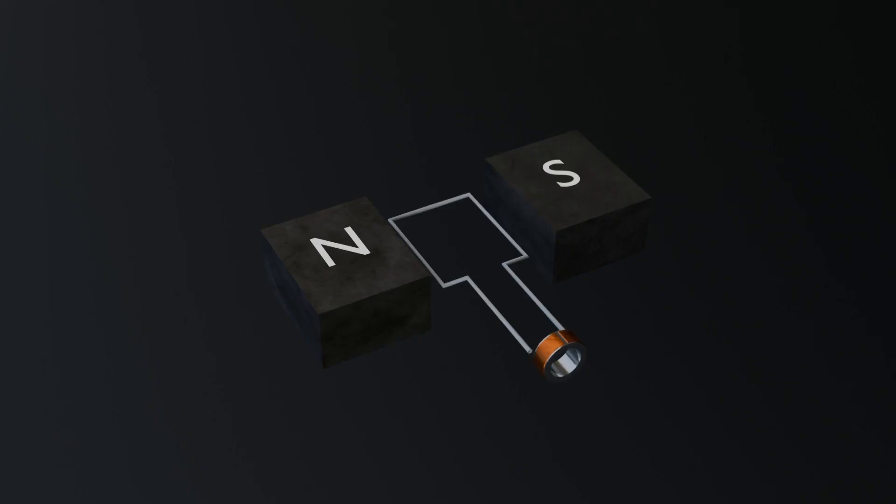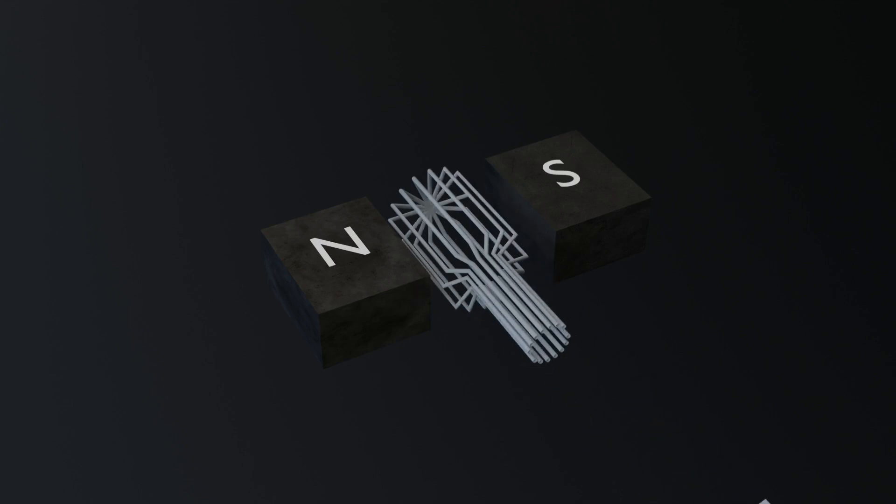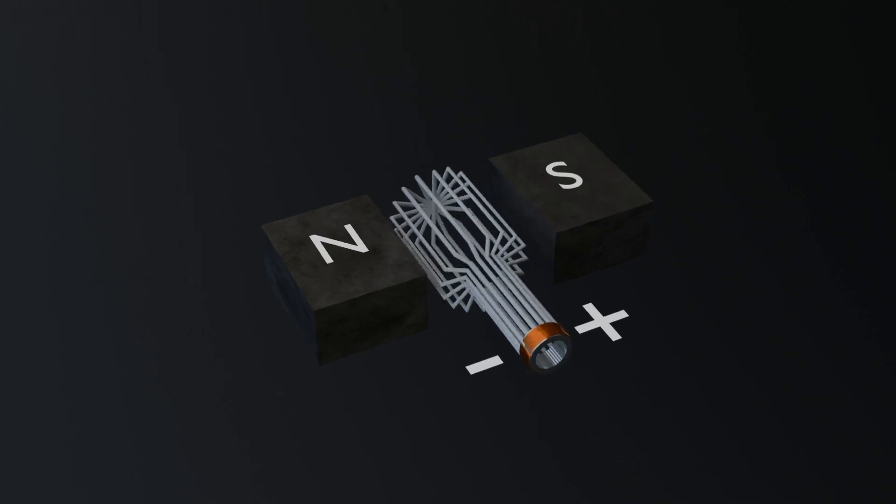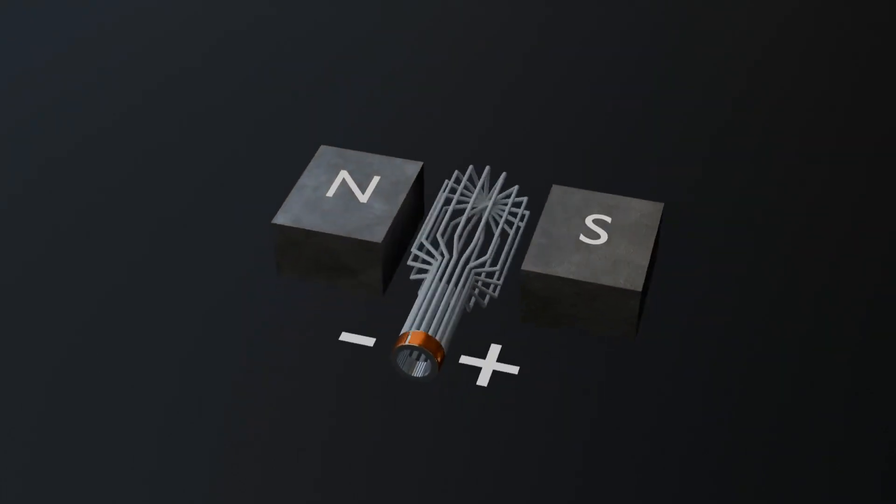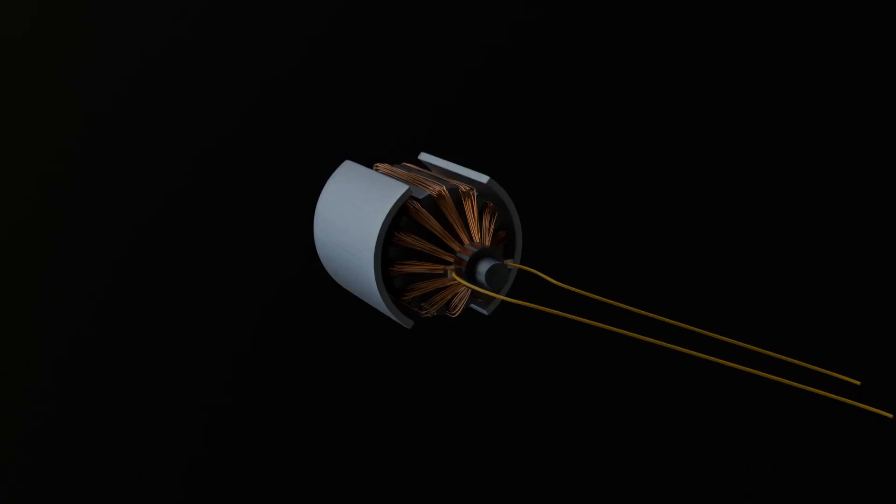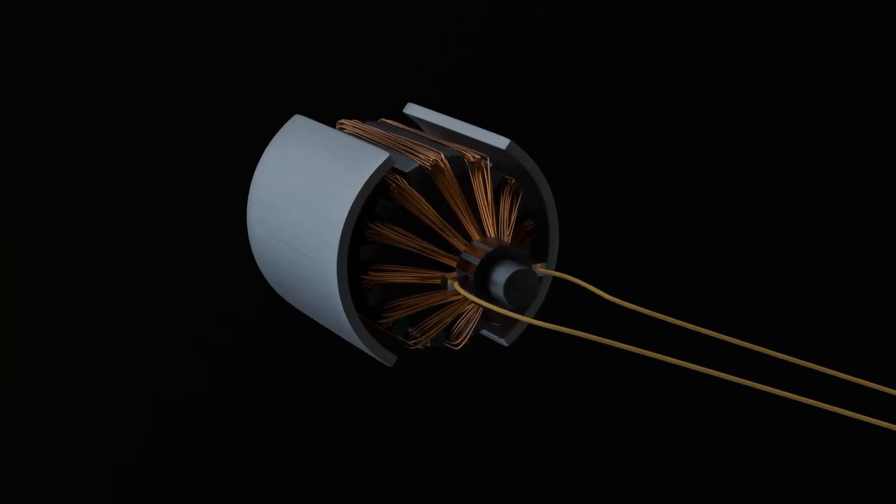This reduces fluctuations in the force acting on the coil system, resulting in smoother and more consistent motion. By adding even more coils, the performance continues to improve, the rotation becomes more uniform, and the motor operates more efficiently with less variation in torque. This is how modern motors are designed to achieve smooth operation.